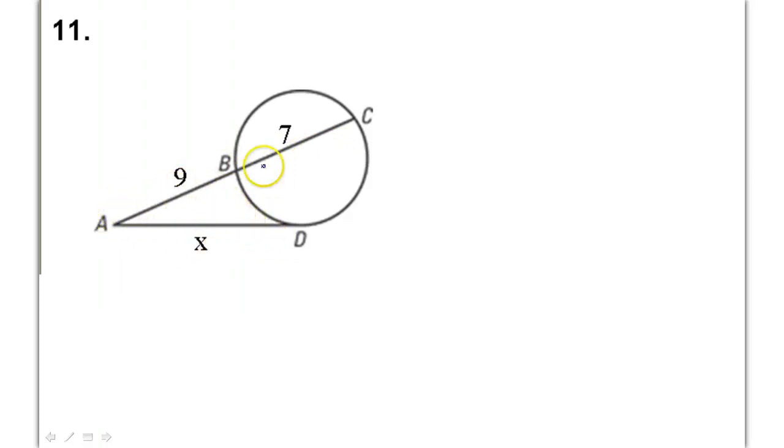Now, in the upper segment, it's pretty simple. The part, which is always going to be the outer part, when I say part times whole, the part is going to be 9. And then the whole is going to be everything from here to here. So that will be 9 plus 7.